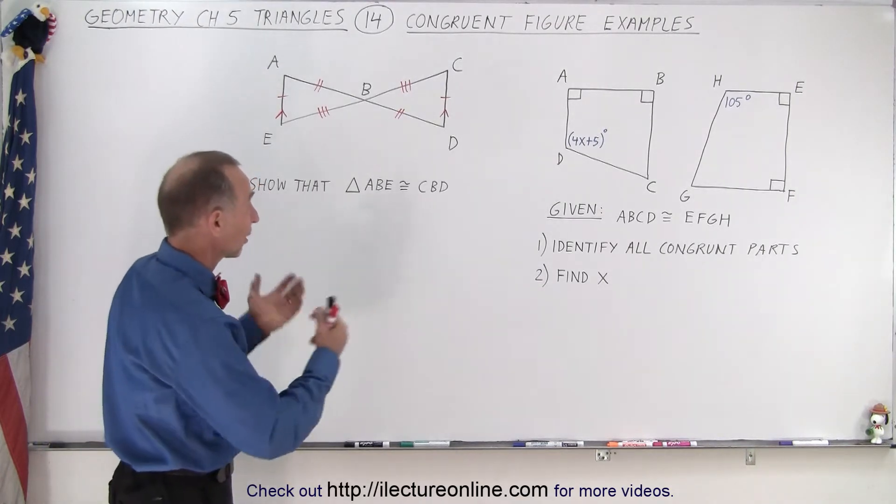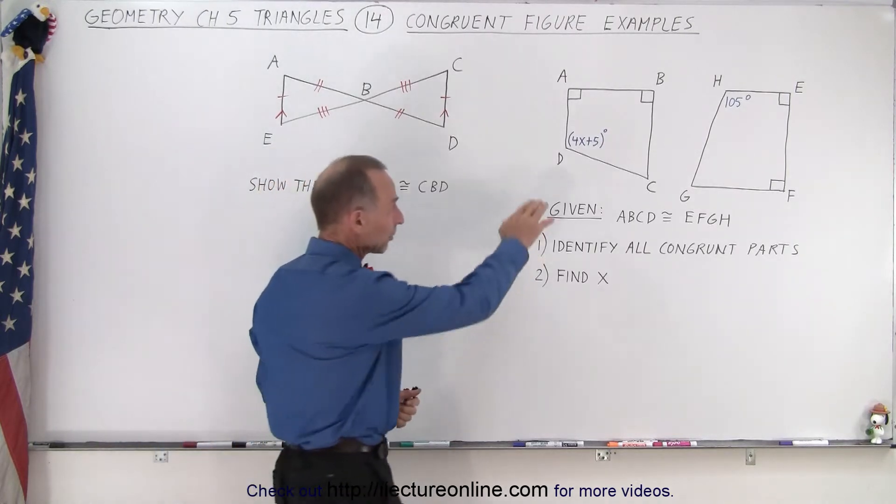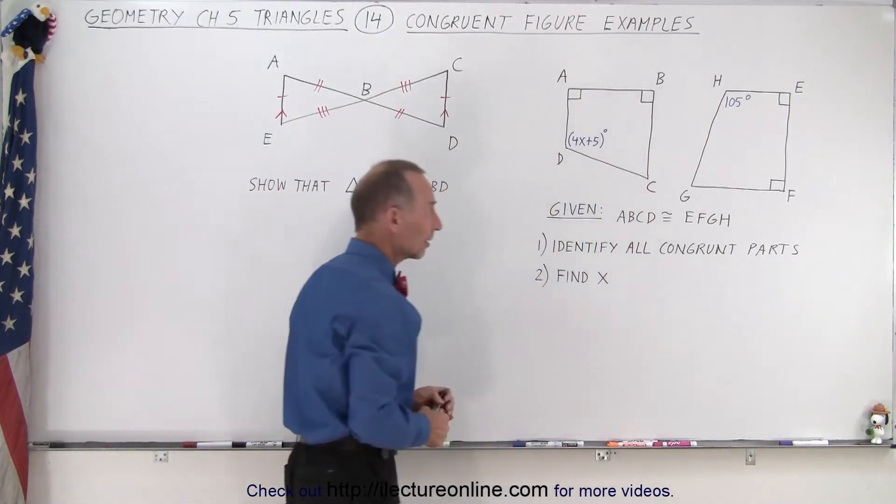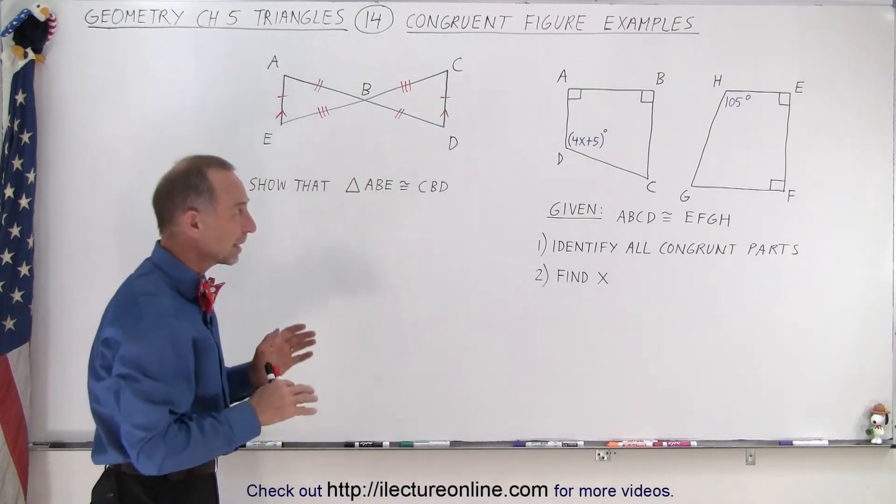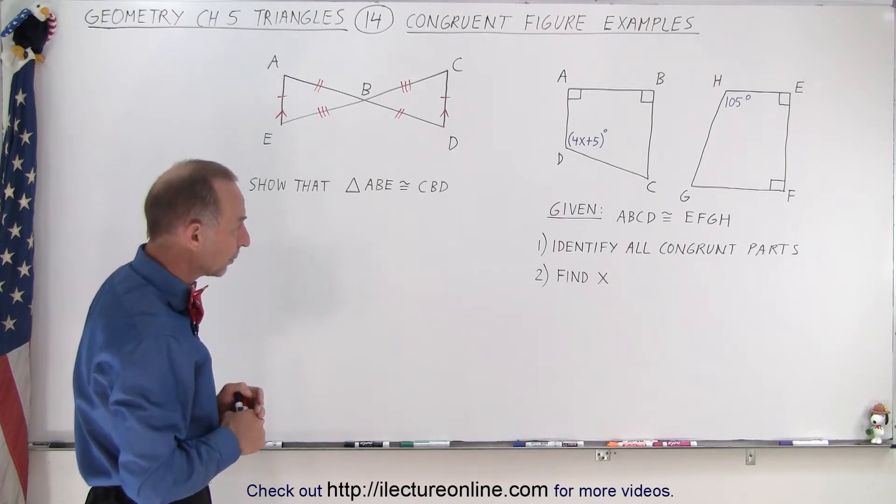So here we have two sets of figures. These are two triangles. These are obviously not triangles. They have kind of a random shape, but they each have four sides and four corners, or four angles.